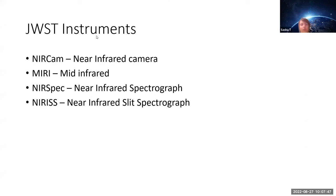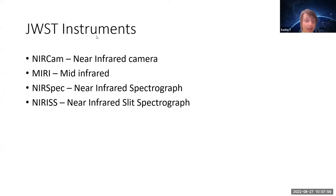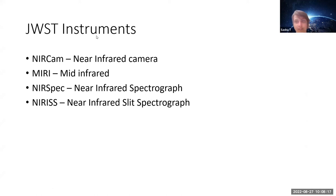James Webb's instruments include the Near Infrared Camera, which takes pictures in near infrared; the Mid Infrared Camera in mid infrared; the Near Infrared Spectrograph, which splits light into component frequencies; the Near Infrared Slit Spectrograph for tiny light sources; and the Fine Guidance Sensor. I'm focusing mostly on the imaging instruments since these provide the most data flow out of James Webb.